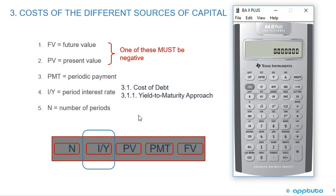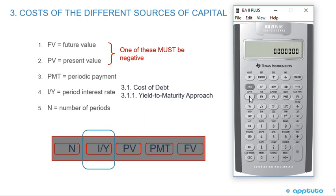If it's semi-annual, we need to check our parameters using second P/Y. I have that set to annual from a previous problem, so I'm going to change that to two and hit enter — that's what we need for a semi-annual bond. Periods per year equals two for semi-annual. Then N is the number of periods, I/Y is what we're solving for, present value is the price of the bond today, payment is the coupon payment, and future value is the face value of the bond received at maturity.